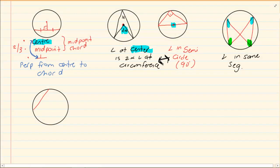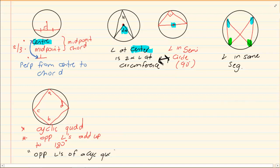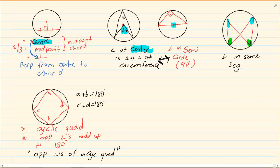The next theorem is: opposite angles of a cyclic quad equal 180 degrees. The opposite angles add up to 180 degrees. The reasoning you must use is 'opposite angles of a cyclic quad.' That means angle A plus angle B equals 180 degrees, and angle C plus angle D equals 180 degrees — they are opposite to each other.